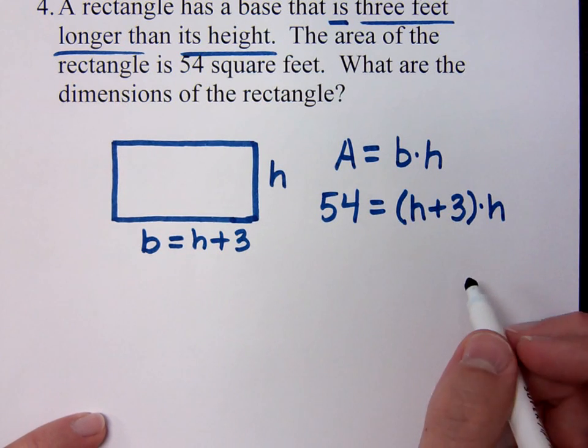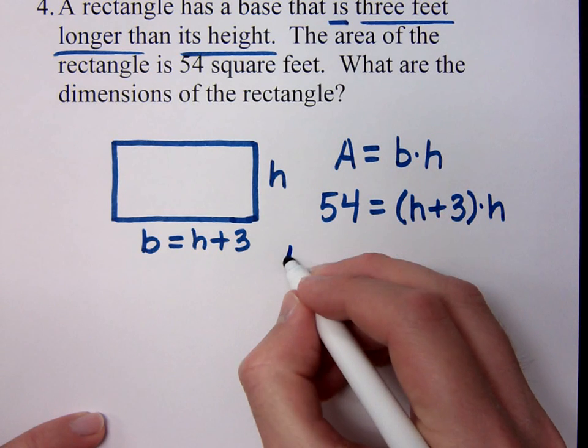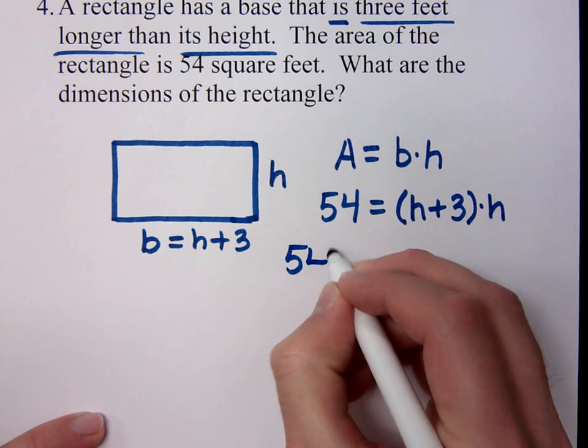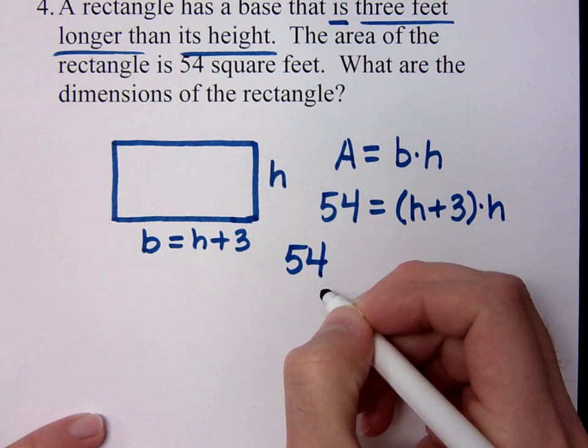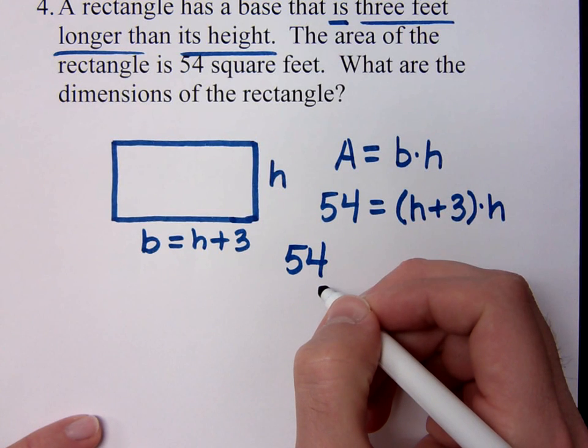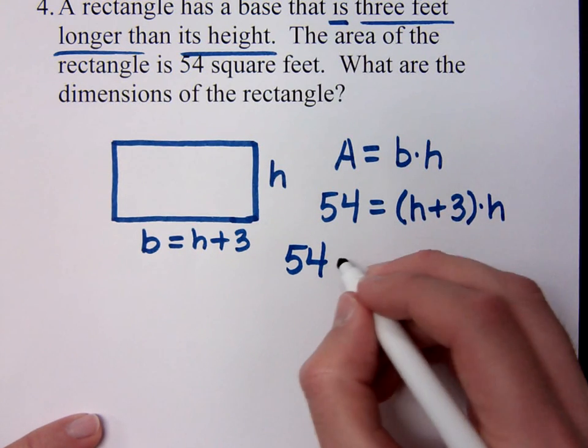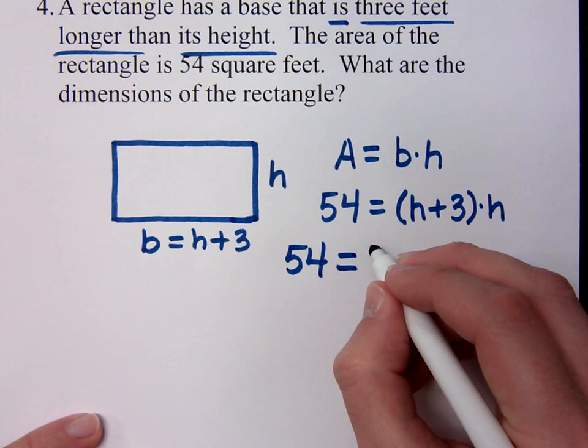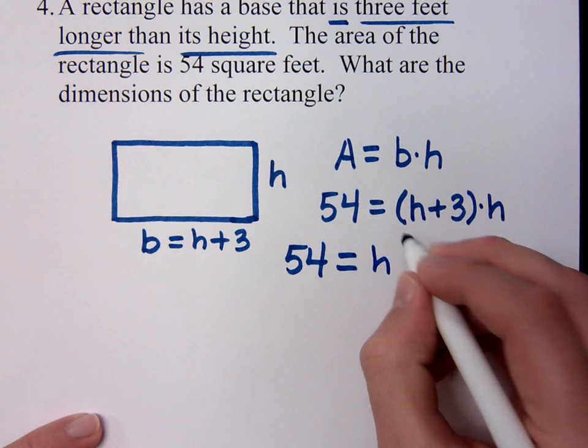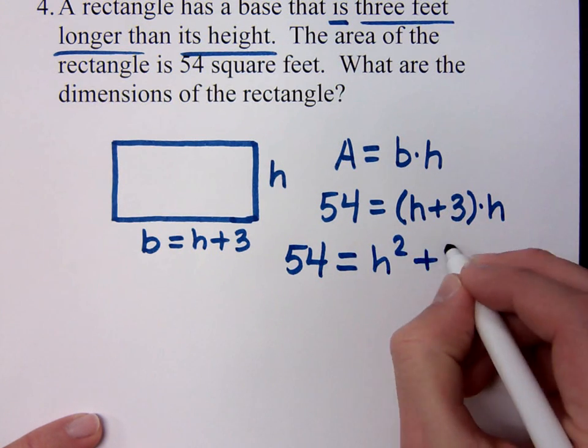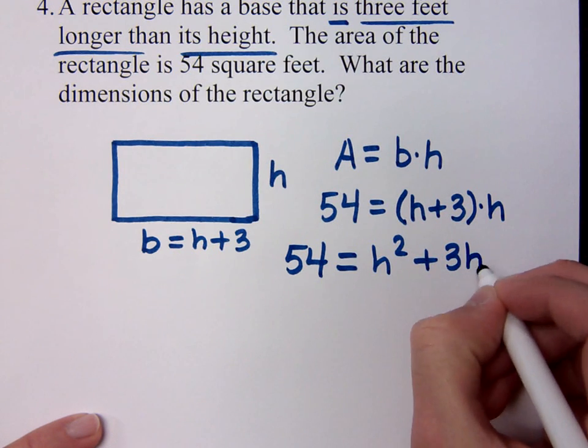Well, you know what you've got to do. I've got to do something with this stuff over here on the right side. I've got to distribute that. And what do I get? H squared. Yeah, H squared plus 3H. H squared plus 3H.